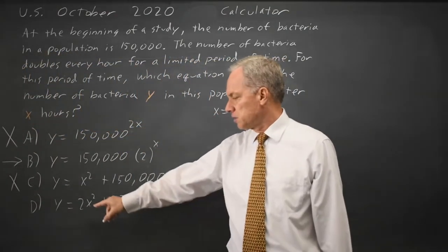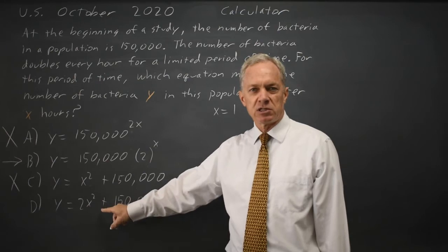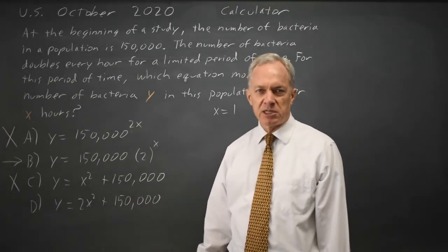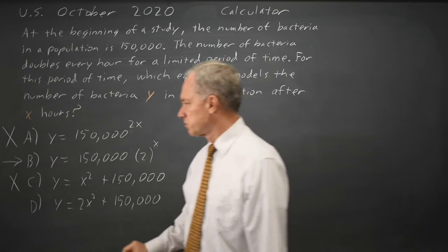Choice D is similarly twice 1 squared is 2, so I've only increased my number by 2 bacteria, not by a factor of 2. Choice D is wrong.